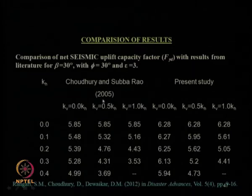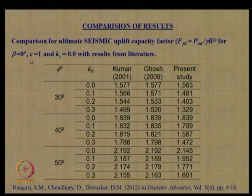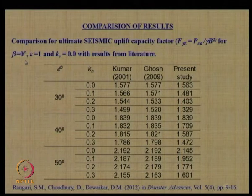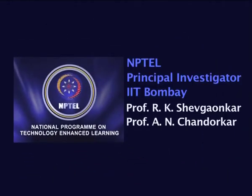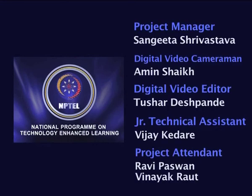Results for inclined anchors are compared with Choudhury and Subbarao's 2005 results for inclined anchors, and with Kumar and Ghosh's results for horizontal anchors (β = 0°). The present study results are available as design charts for given KH, KV, φ, embedment depth, anchor inclination, and load inclination angles. With this, we have come to the end of today's lecture and will continue further in the next lecture.